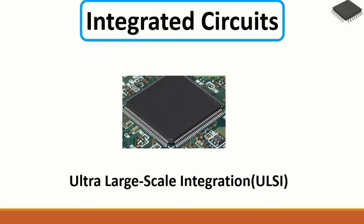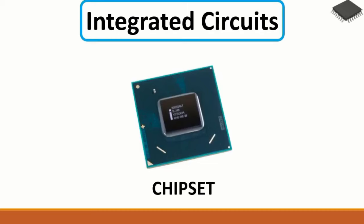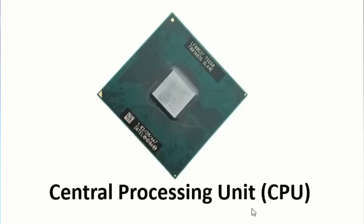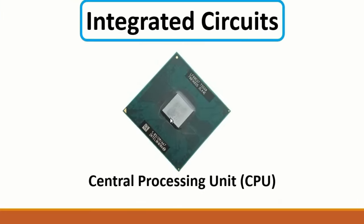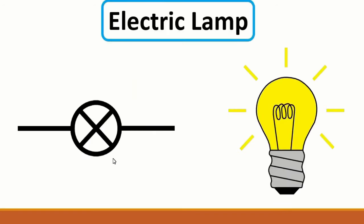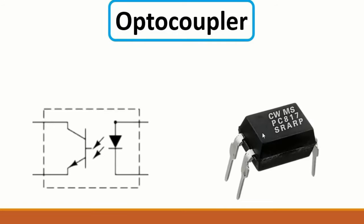Then we have chipsets - you can find the processor, the GEM stage, the ICH, graphic card etc. as chipsets. Here we have the Central Processing Unit - CPU - or processor. Then we have RAM - Random Access Memory. Then we have the electric lamp symbol.